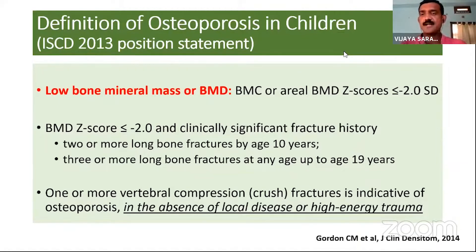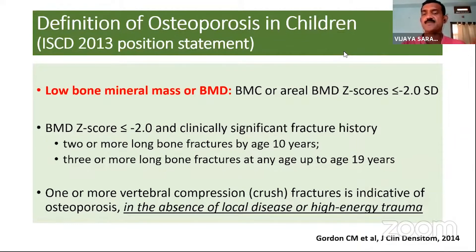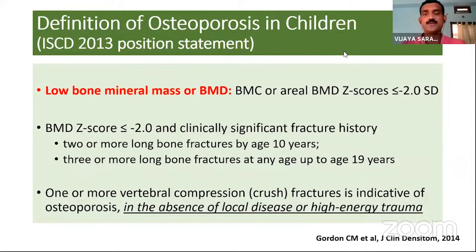A Z-score of ≤ −2 alone is not sufficient to define osteoporosis. It must be associated with clinically significant fracture history: at least two or more long bone fractures in children younger than 10 years, or three or more long bone fractures in children aged 11 to 19 years. However, there is an exception: if a child has a vertebral compression fracture occurring in the absence of local disease or high-energy trauma, we make a diagnosis of osteoporosis irrespective of the BMD.